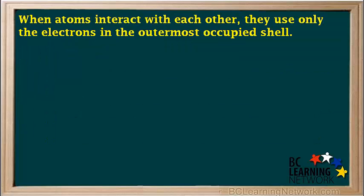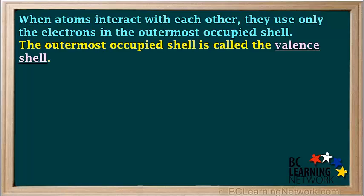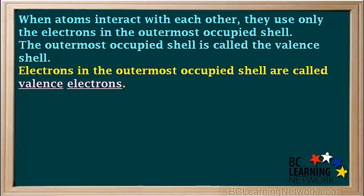When atoms interact with each other, they use only the electrons in the outermost occupied shell. The outermost occupied shell is called the valence shell, and electrons in the outermost occupied shell are called valence electrons.